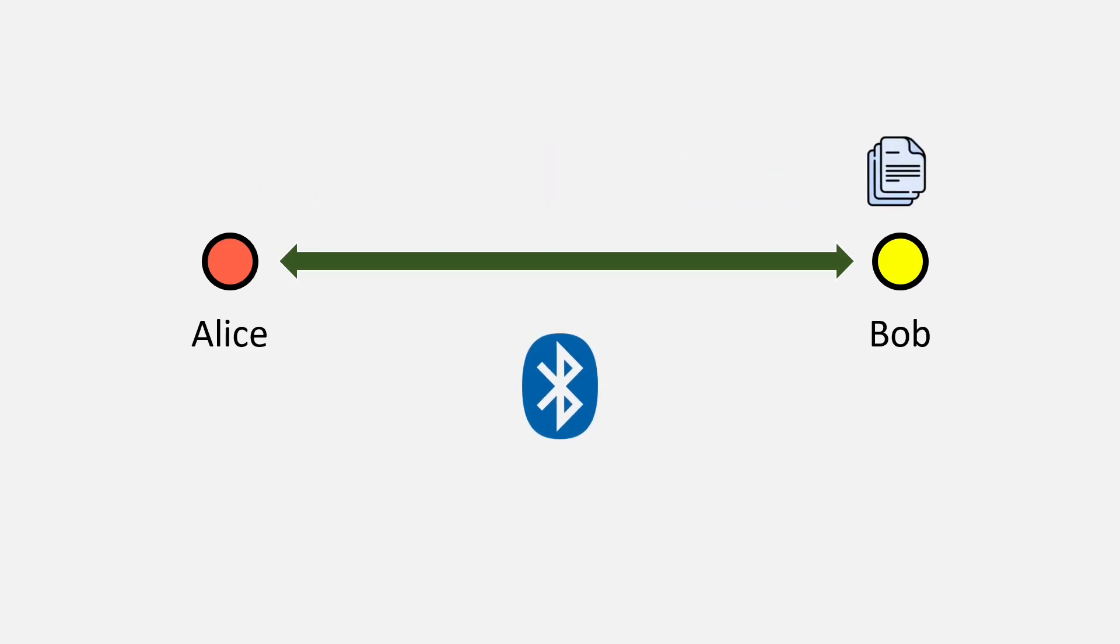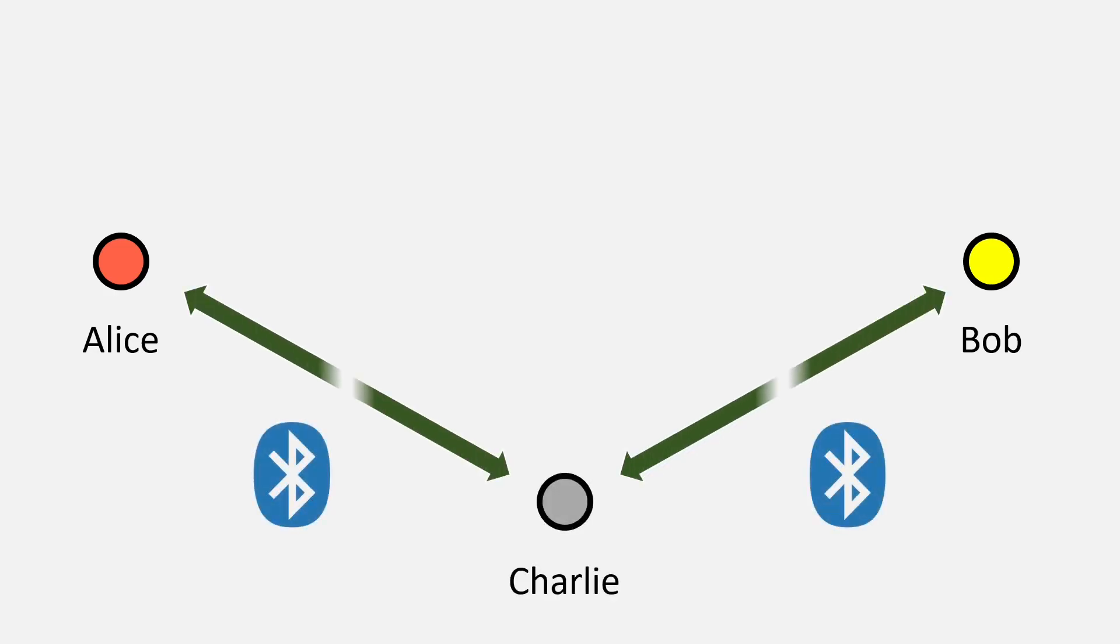Things get interesting when Alice and Bob are too far apart for direct Bluetooth communication. In such a case, if another active user, say Charlie, is within Bluetooth range of both Alice and Bob, BitChat uses Charlie's device as a relay. That is, messages travel from Alice to Charlie and then from Charlie to Bob.